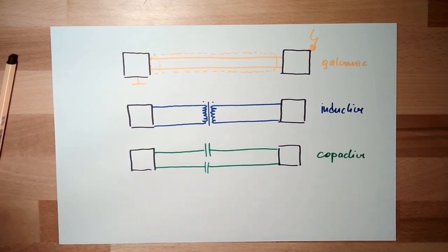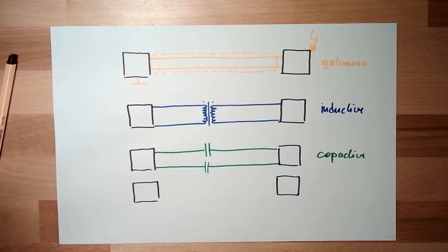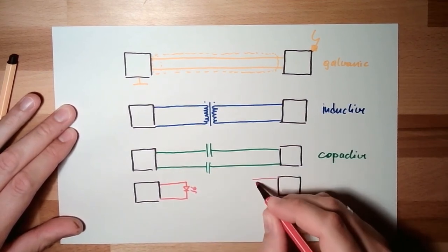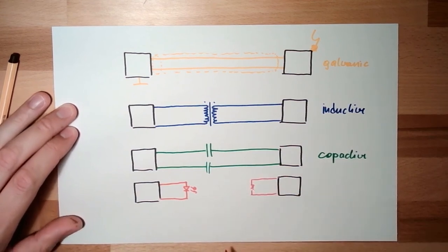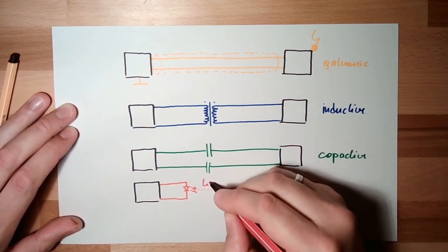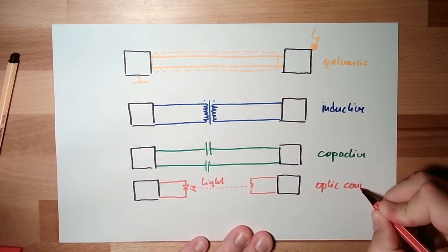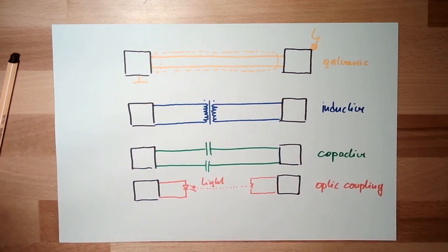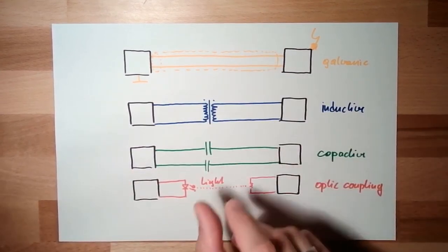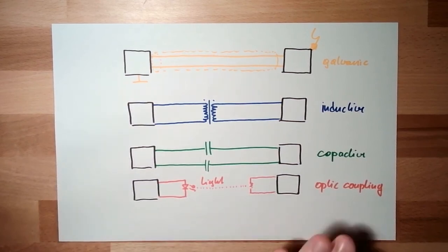Another possibility is optic coupling: here there is an LED on one side and a photo transistor on the other, with light in between - a light coupling, or optic coupling. This might use a fiber optic cable, which can span kilometers or be contained in one small element like an optocoupler. The important thing is that it is galvanically isolated.